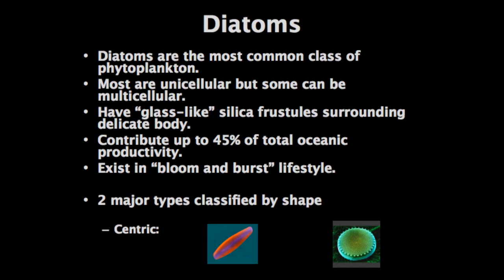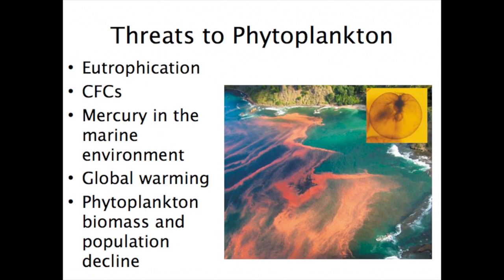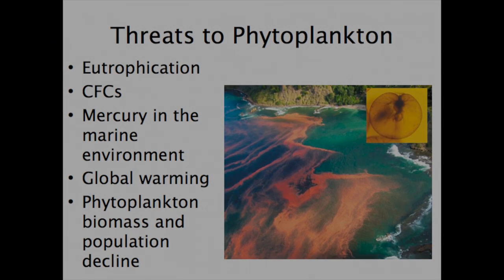Diatoms are the most common class of phytoplankton. Eutrophication is a major problem when there are too many groups of phytoplankton in an area. Artificial addition of nutrients to an ecosystem causes a bloom in biomass, commonly from nitrogen and phosphorus runoff from fertilizers. This also negatively affects seagrass, as we discussed. Threats to phytoplankton include eutrophication, chlorofluorocarbons, mercury in the marine environment, global warming, and phytoplankton population decline.